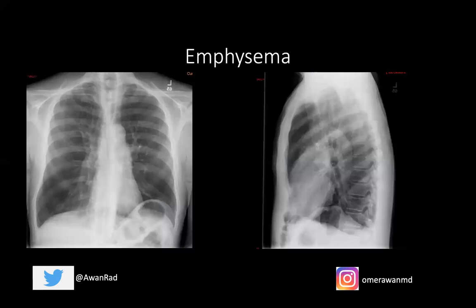Moving on to emphysema — another cause of non-reversible obstruction. This can present with dyspnea and a chronic cough. Emphysema is defined as permanent dilation of air spaces distal to the terminal bronchioles — we're talking about the respiratory bronchioles and the alveoli — with destruction of those air spaces.